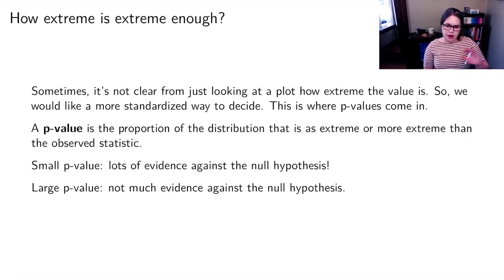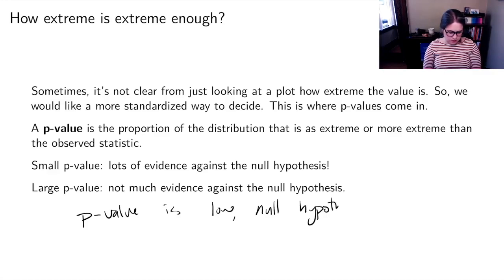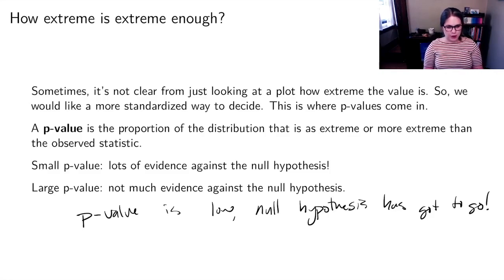Sometimes it's hard to remember how these two things connect. I had a student a few semesters ago who told me this mnemonic device, which is if the p-value is low, the null hypothesis has got to go. So you're going to reject the null. P-value is low, null hypothesis has got to go. So that might help you remember.